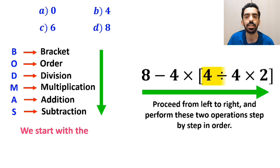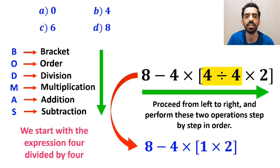So, first we start with the expression 4 divided by 4, and rewrite this expression as 8 minus 4 multiplied by 1 times 2 inside the brackets.